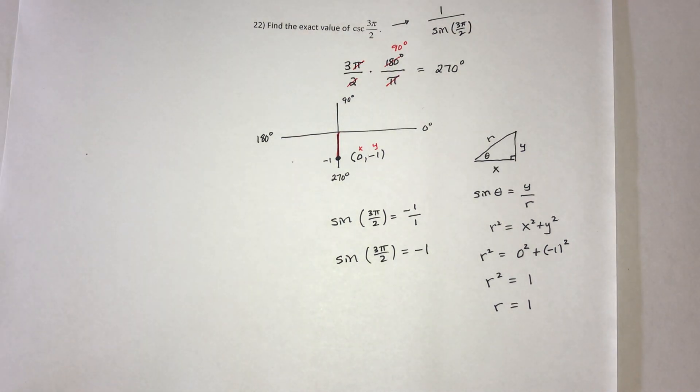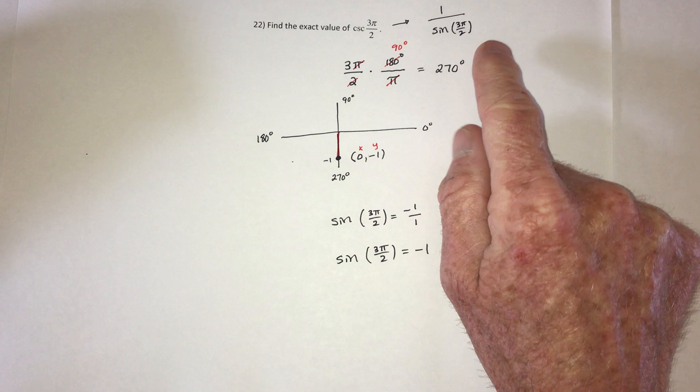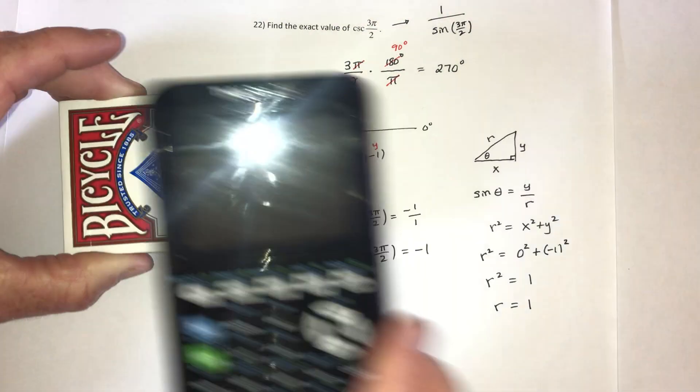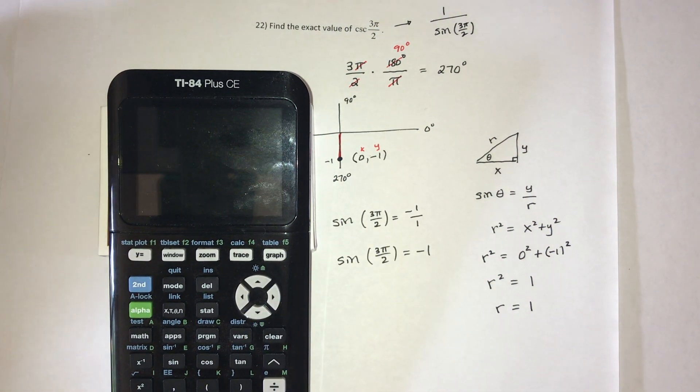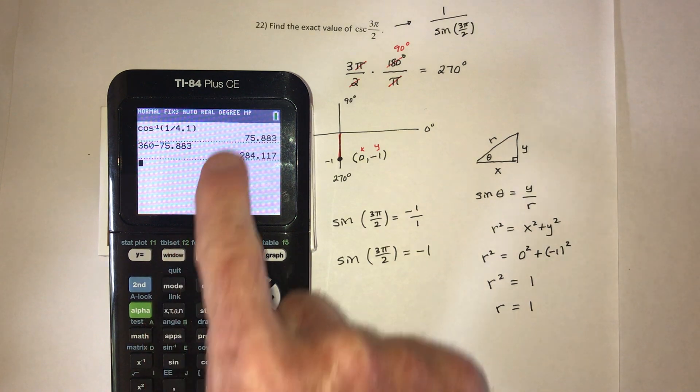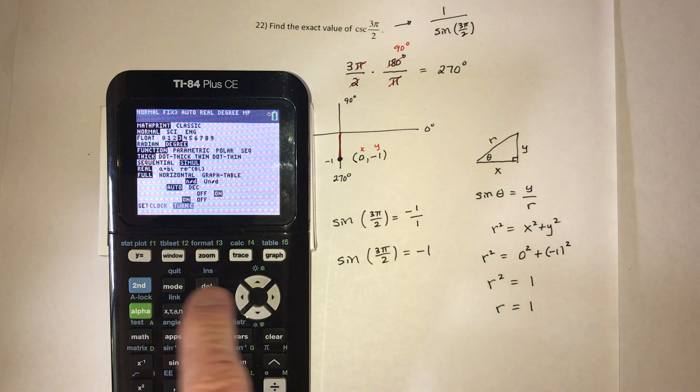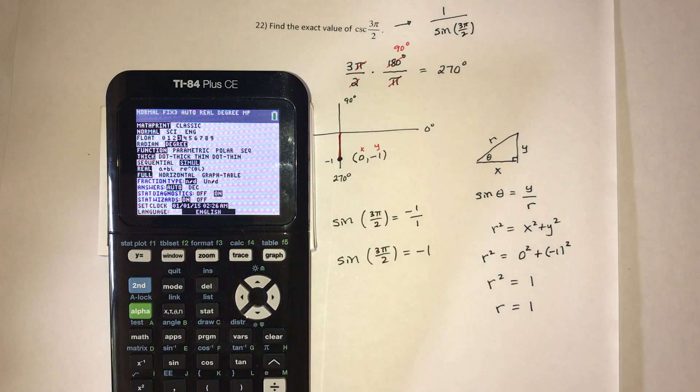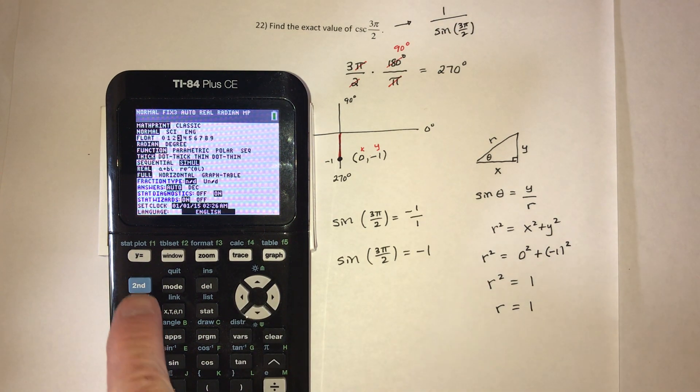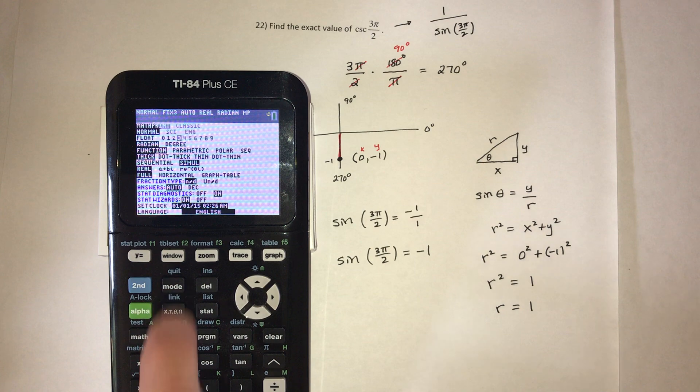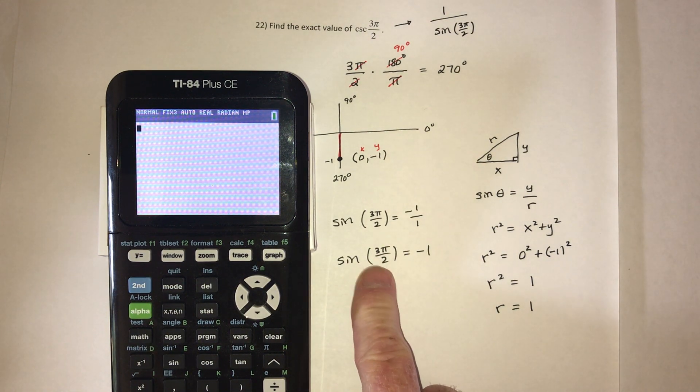Now I want to check that on the calculator before I go ahead and finish the problem. So right now my calculator is in degrees. Go to mode, move down to radians, hit enter. Now it's in radians. Put second quit. And now let's see if I got this part right.